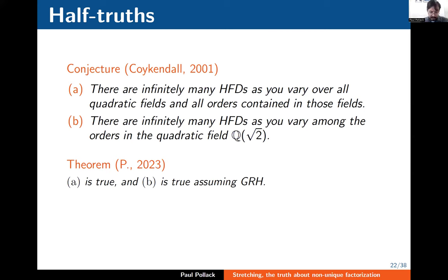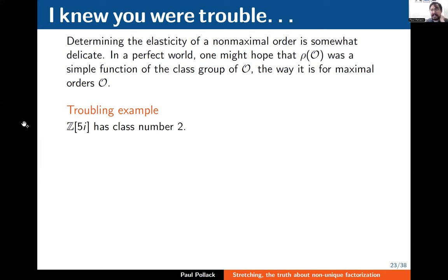Before explaining these results, I should say something about elasticity of non-maximal orders. For the maximal order, there's a beautiful theorem: as long as it's not a UFD, the elasticity is just half the Davenport constant of the class group. For non-maximal orders there's still a class group, and you might hope the elasticity is again half the Davenport constant. But that's not the case. Let me give a troubling example: Z[5i], the order of conductor 5 in Q(i). You can check the class number of this order is 2 — but the elasticity is actually infinite.